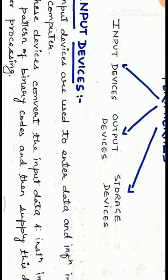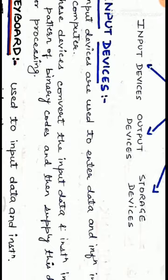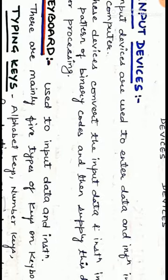Input devices. So first of all, what is input? Input refers to the data or instructions which we feed into a computer. Input devices are used to enter input into a computer. These devices convert the input data and instructions into a pattern of binary codes, and we all know that a computer understands only one language, that is binary codes or machine language. Therefore, input devices convert input data and instructions into binary form and then supply this data for processing.